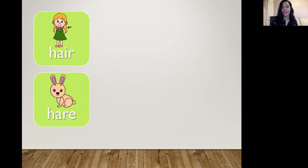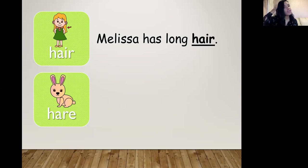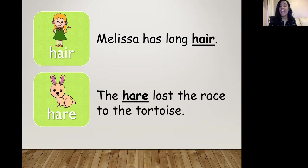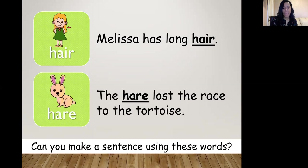Hair and hare. The very common one that people tend to make a mistake with because it's a nice A sound. Hair and hare. Melissa has long hair. So her hair, hair. Now another word for a rabbit, a bigger rabbit is what we would call hare. The hare lost the race to the tortoise. Hair and hare. Can you make a sentence using these words?